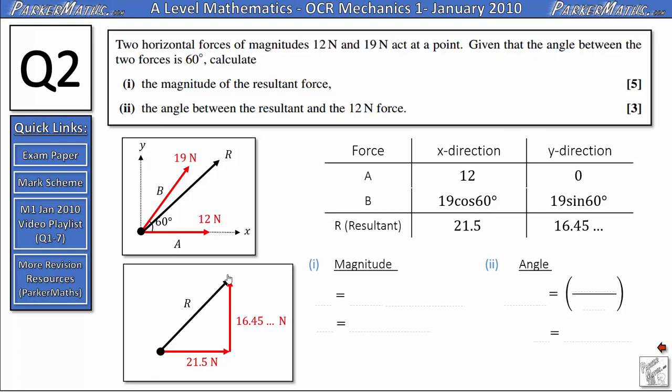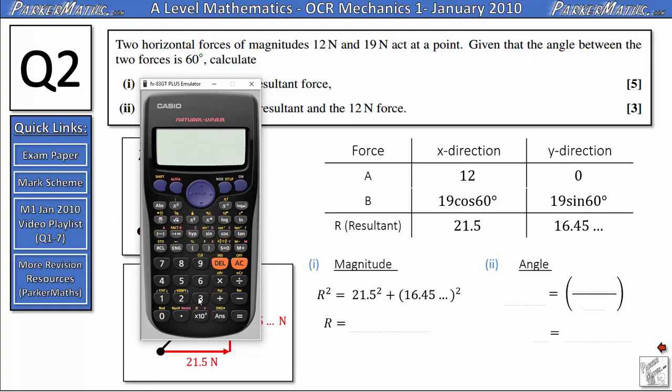Now that they're at right angles to each other, I can use Pythagoras to work this out. I can say that r squared equals 21.5 squared plus 16.45 squared. From here I can use my calculator to work out r. To access the value I've got stored, I use the alpha button up here and then press the letter and I get 733. So to find r, all I need to do is square root that and I get 27.1 if I round it to three significant figures.